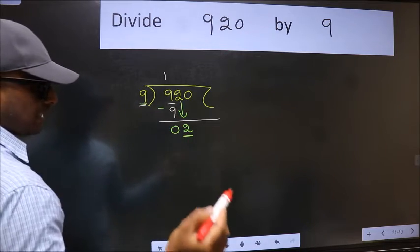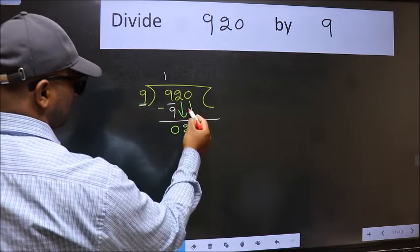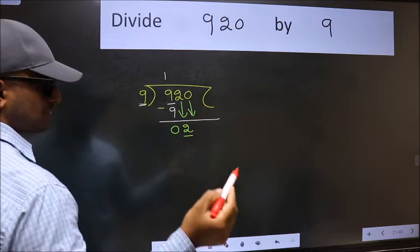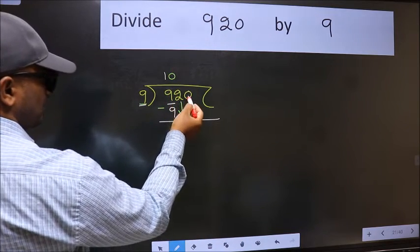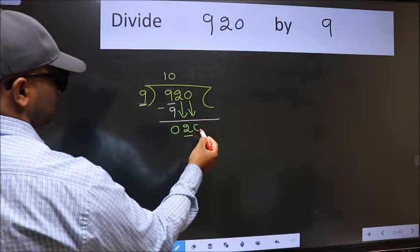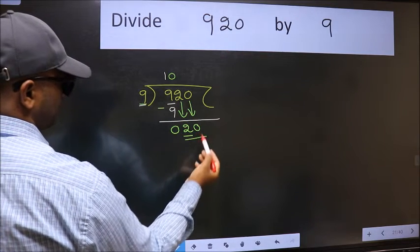So we should bring down the second number. And the rule to bring down the second number is we should put 0 here. Then only we can bring this number down. Now 20.